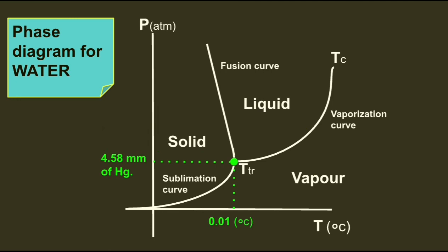Here in the phase diagram of water, at pressure 4.58 mm of mercury and temperature 0.01 degrees Celsius, all three states—solid state, liquid state, and gaseous state—can exist. That means you can get ice, water, and vapor at this temperature and pressure at the same time.